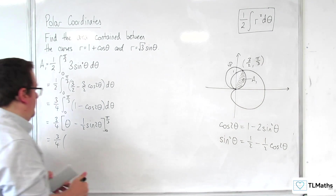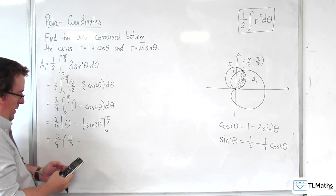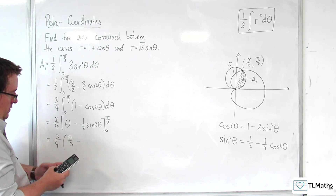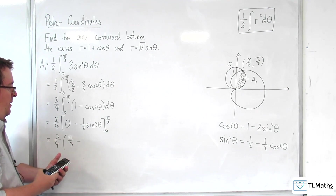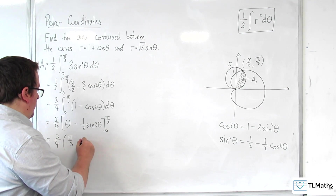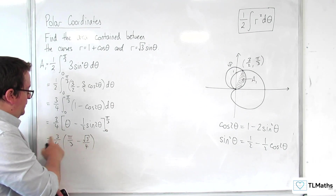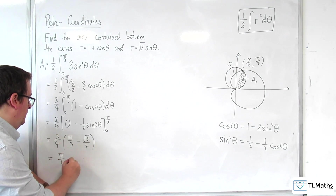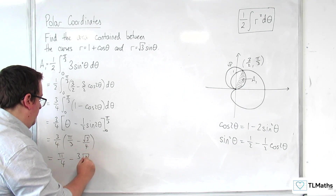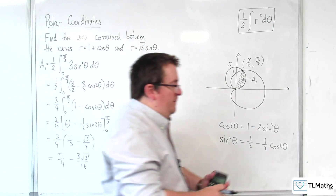Evaluating: 3 quarters times [pi over 3 minus 1 half times sine(2 pi over 3)]. Sine(2 pi over 3) gives root 3 over 2, so 1 half times root 3 over 2 is root 3 over 4. The lower limit gives 0. Multiplying through: A1 equals pi over 4 minus 3 root 3 over 16.